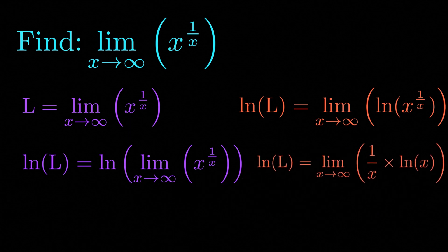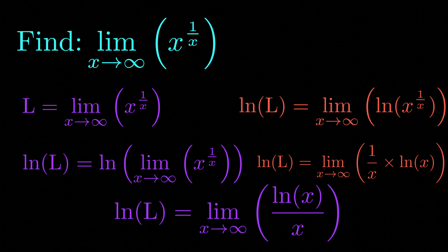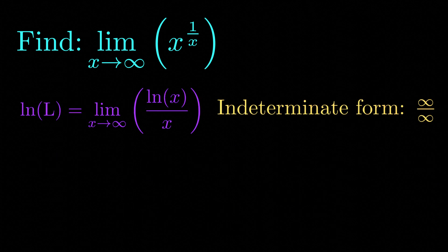So we have the natural logarithm of L is equal to the limit as x approaches infinity of the natural logarithm of x divided by x. Notice that this is of indeterminate form infinity over infinity if we let x tend to infinity.